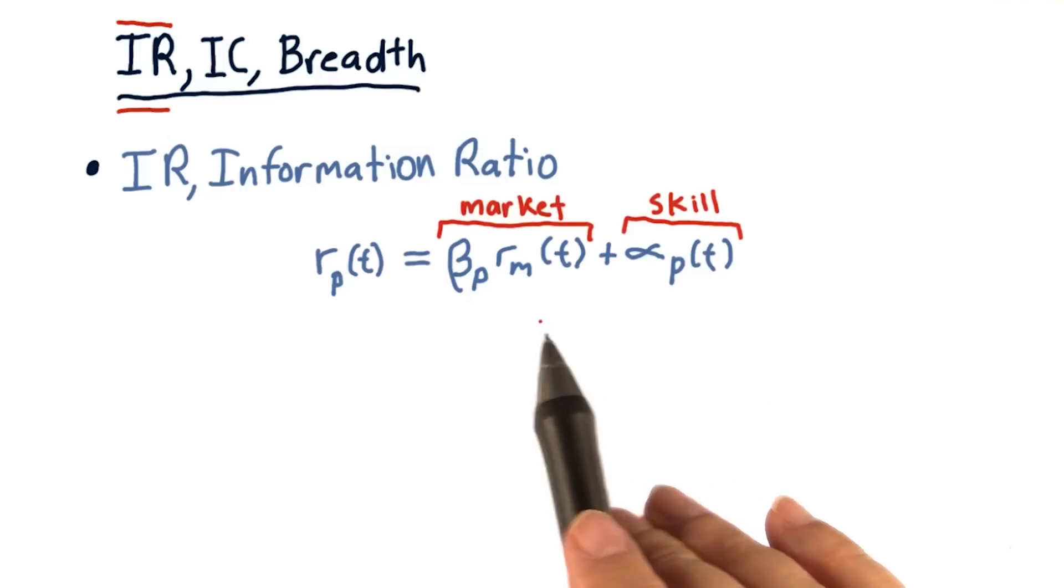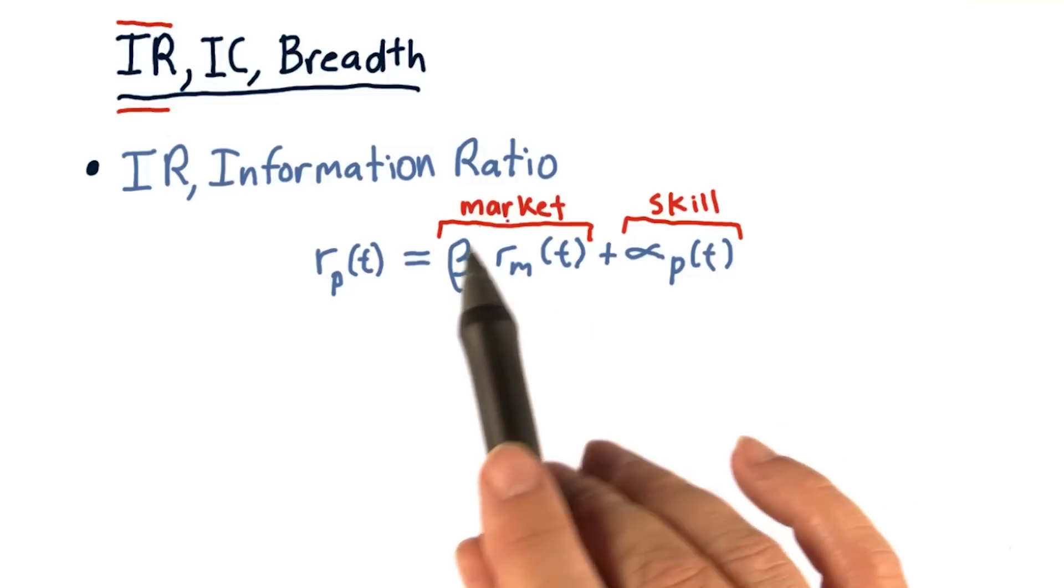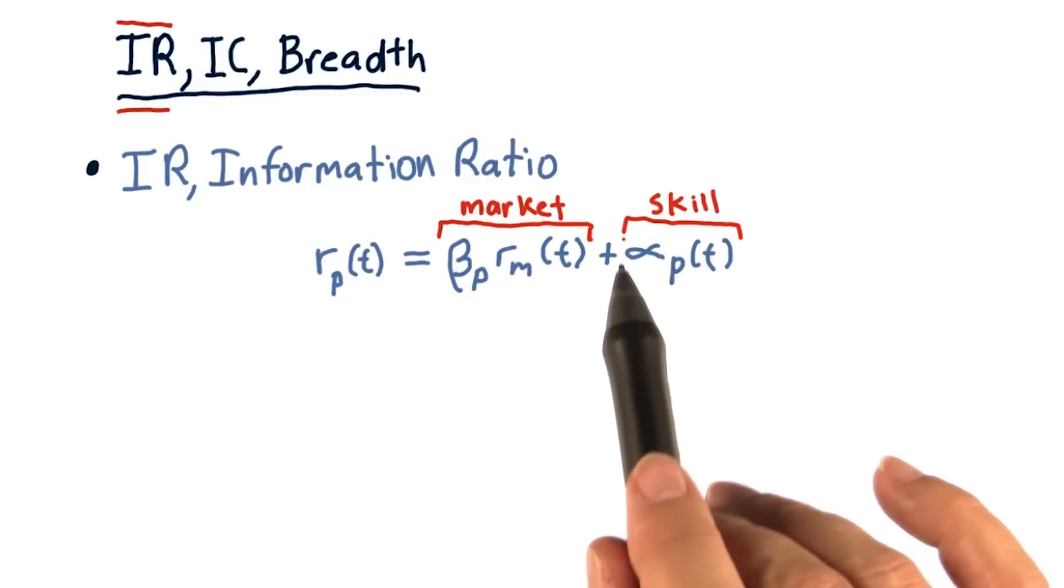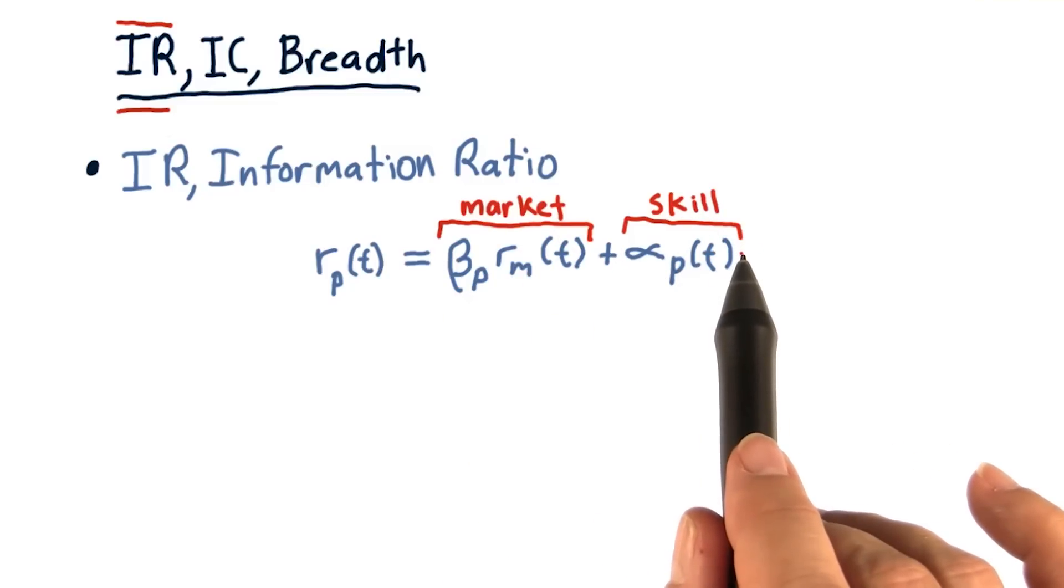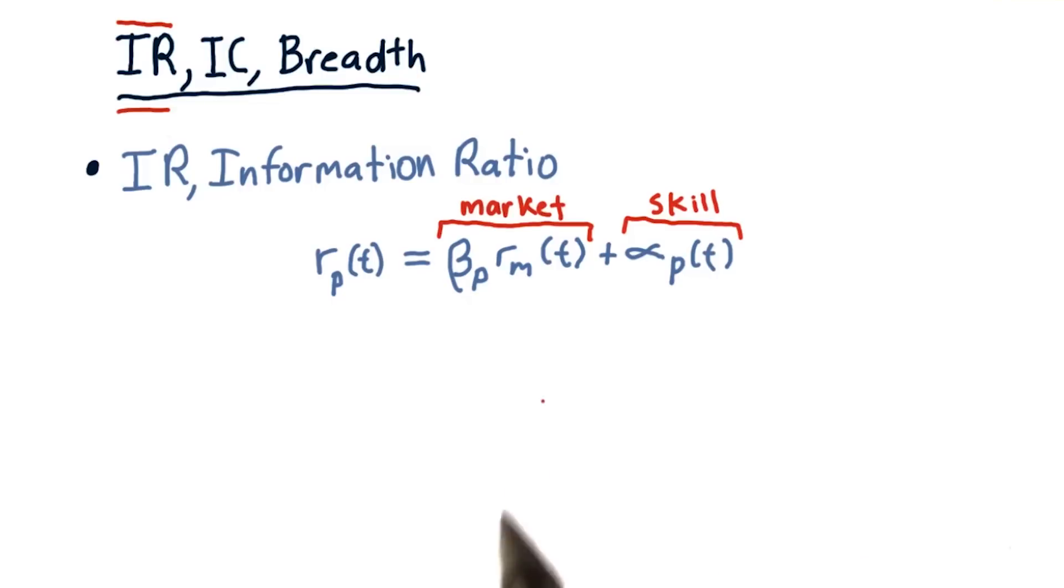Another way to look at that is to say that this component of the return is due to the market, and this component is due to the skill of the fund manager. Remember, alpha is about skill.